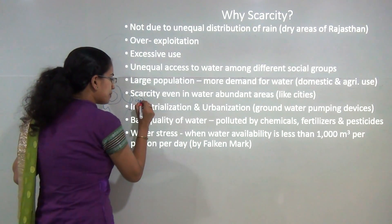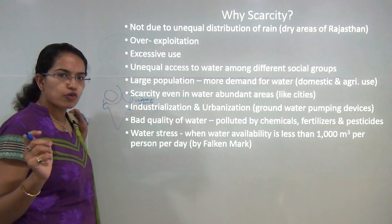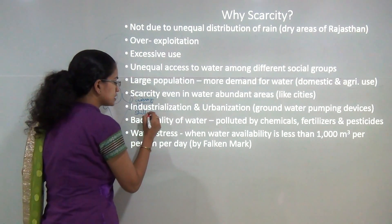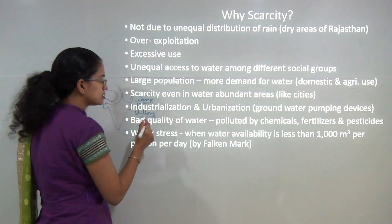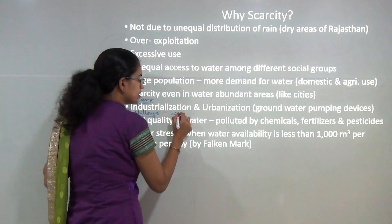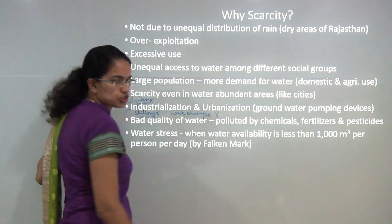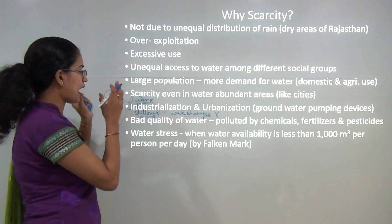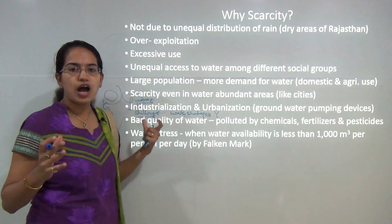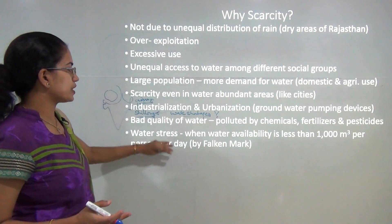You might be familiar with Cherrapunji and Mawsynram — the areas of heaviest rainfall. Yet Shillong, which is hardly 120 kilometers from Cherrapunji, still suffers from acute water shortages. Despite abundant rainfall in this region, you have areas with water shortage. What is the reason for such shortage?